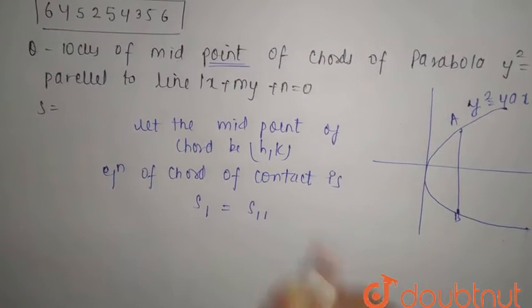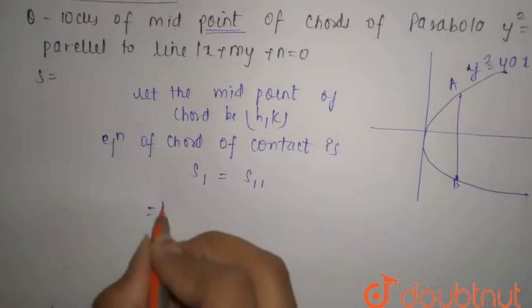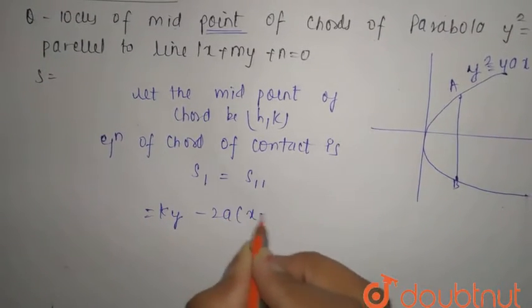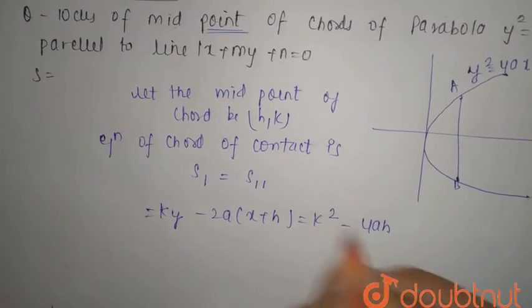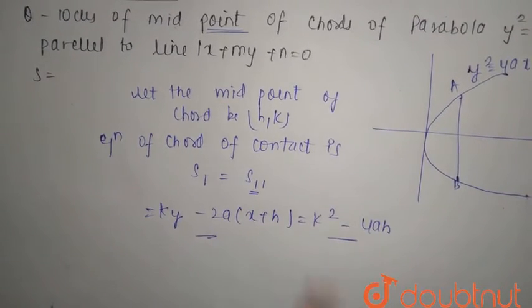That is ky - 2a(x + h) = k² - 4ah. This is the equation of chord of contact.